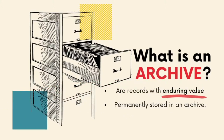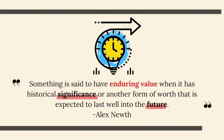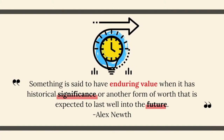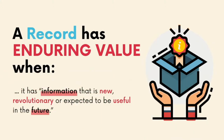Lastly, we have the archives. In this video, we will discuss archives as a resource rather than as an institution. So what is an archive? Archives are records with enduring value. But how can we say that something has enduring value? According to Alex Newt, something is said to have enduring value when it has historical significance or another form of worth that is expected to last well into the future — meaning that enduring value makes an object important or valuable enough for the organization to hold on to that object. It can be said that records have enduring value when they have information that is new, revolutionary, or expected to be useful in the future. This enduring value is a valid reason for the organization or institution to keep and preserve these records as their archives.